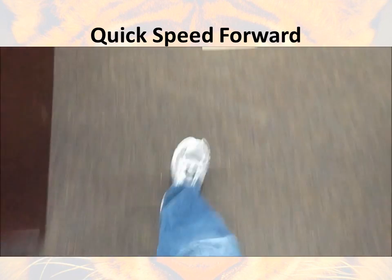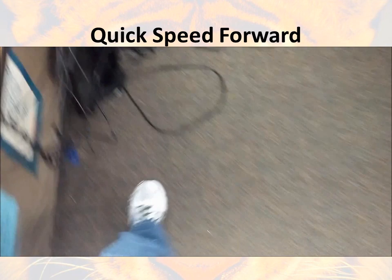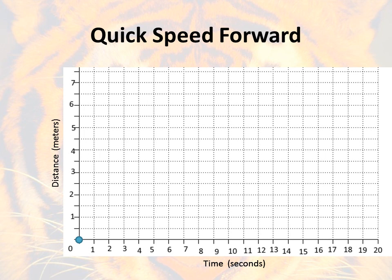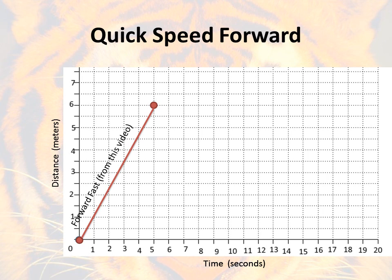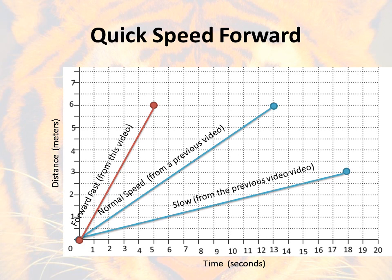Let's try one where I go a little quicker. I'm at one meter, two meters, three meters, four meters, five meters, and at the end — and I got there in about five seconds. To plot that: I started at zero, went all the way to six meters, and it took about five seconds. Now comparing all three graphs, you can see how much quicker my line went up. Because my line went up quicker, I went a greater distance faster — and that is speed. I was much speedier that time than in my other videos.